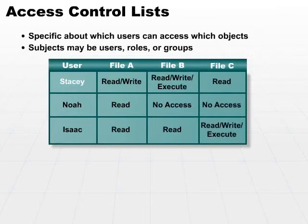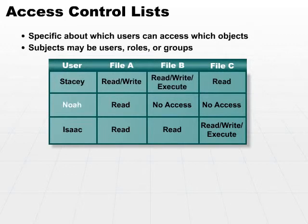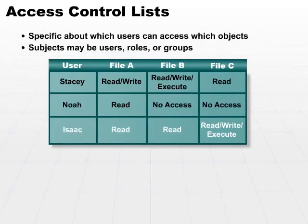We can see that Stacy is given read and write permission for file A, read, write, and execute permission for file B, and only read permission for file C. Whereas Noah has read permission for file A and no access for B or C. And the last line, Isaac, has read permission for files A and B, and read, write, execute permission for file C.